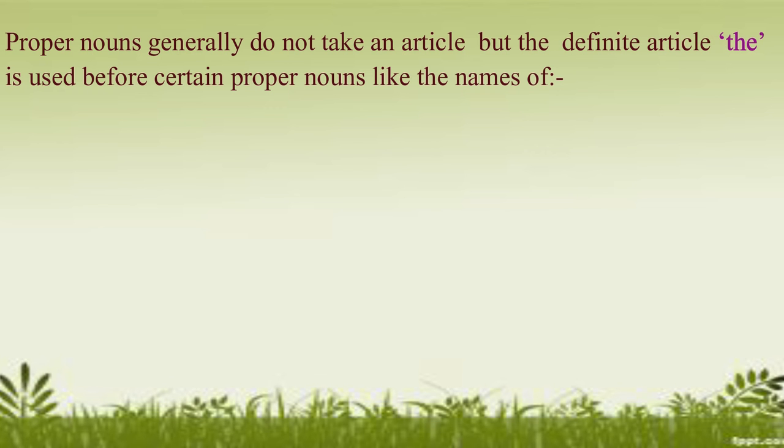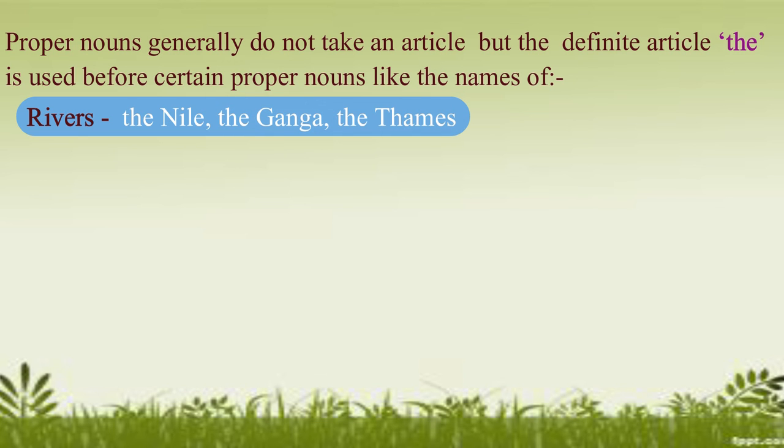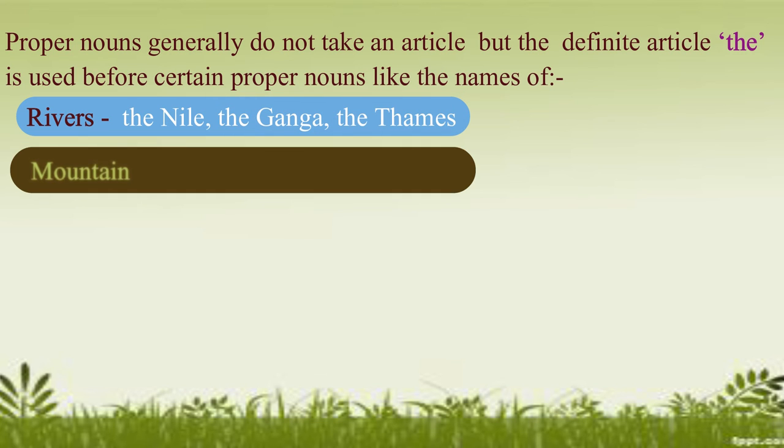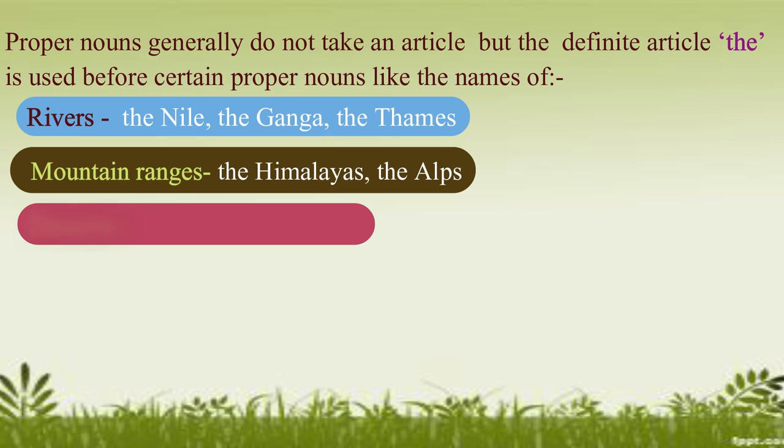Proper nouns generally do not take an article, but the definite article the is used before certain proper nouns like the names of rivers: the Nile, the Ganga, the Thames. Mountain ranges: the Himalayas, the Alps.